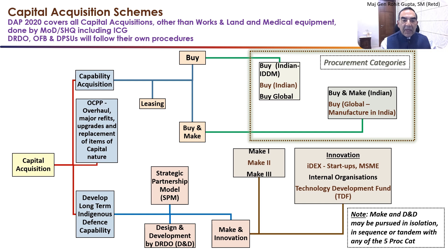Development of long-term indigenous capability is achieved through three vehicles. The first is the Strategic Partnership Model or SPM. Next is Design and Development by DRDO, which is DnD. Then MAKE and Innovation. In the MAKE scheme, you have MAKE 1, MAKE 2, and MAKE 3.